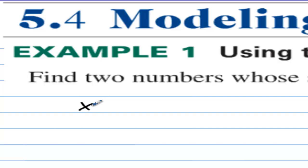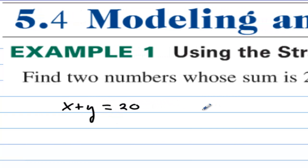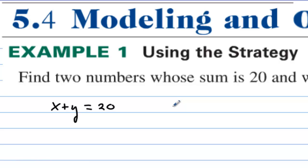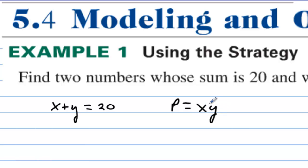So let's find two numbers whose sum is 20. We can write x plus y equals 20, and the product is equal to x times y. Now we want to find out what two numbers makes this product as big as possible, and yet at the same time the two numbers add up to 20. We want to take the derivative on the product, but first we need to eliminate one of these variables.